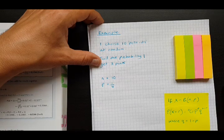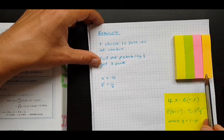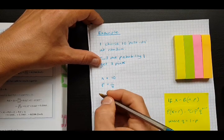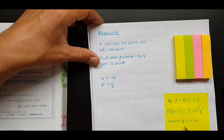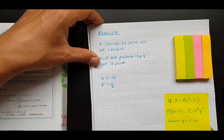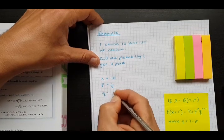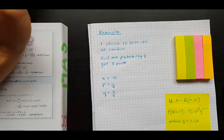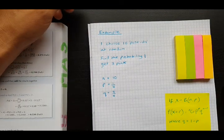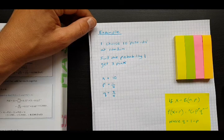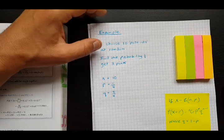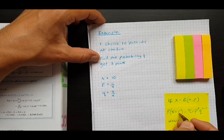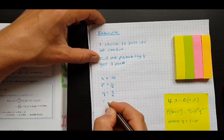Now q is the probability of failure, because either I get pink or I don't. It doesn't matter what other color I get, only whether I get pink or not. There's a reminder here, and this is on your formula booklet, but q is one minus p. Because if p is a quarter, then q would have to be three quarters, because it will either be success or failure. And we want to find out the probability of getting three successes, so r, the number of successes, is three.